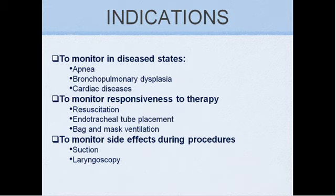Pulse oximetry is used to monitor SPO2 values in disease states like apnea, bronchopulmonary dysplasia and cardiac diseases. It is used as part of resuscitation per NRP 2010 to check endotracheal tube placement, effectiveness of bag and mask ventilation, and to monitor for hypoxia during suction and laryngoscopy.